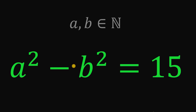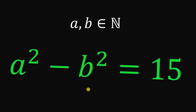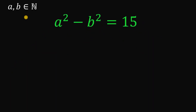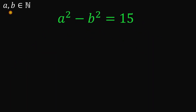Find the values of a and b that satisfy the equation a squared minus b squared equals 15. Pause this video and see if you can answer this question. Given that a and b are in the set of natural numbers, meaning positive integers, the goal is to find the values of a and b.